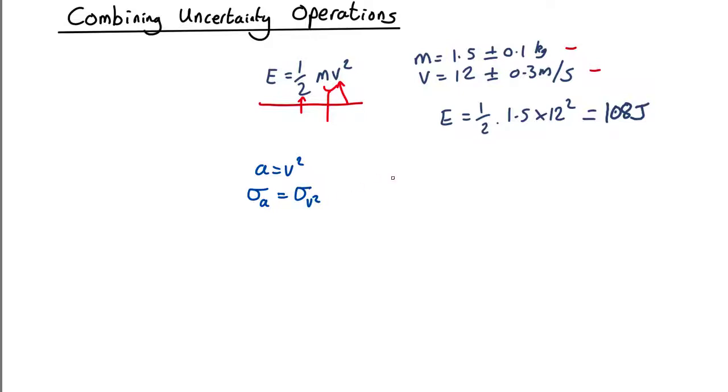Now using the raised to a power equation, we know that the uncertainty in a over a equals two times the uncertainty in v over v.